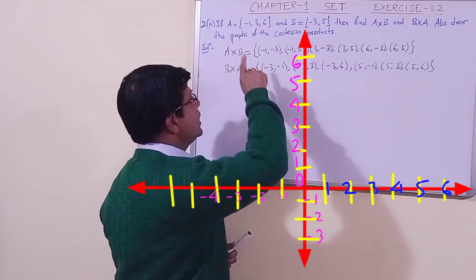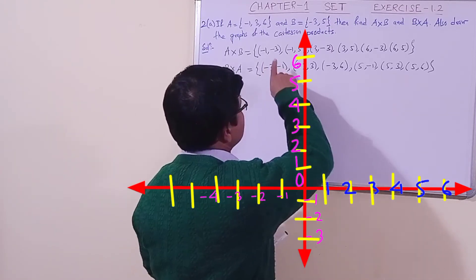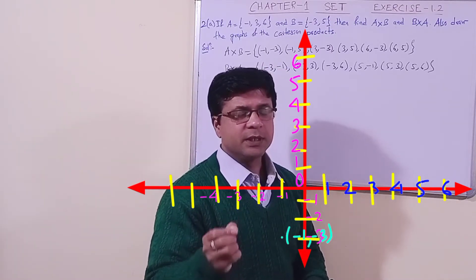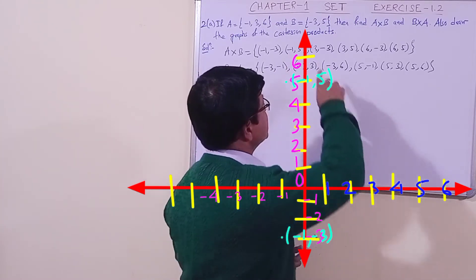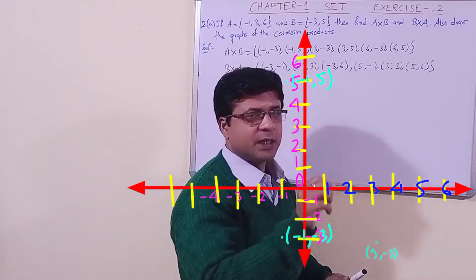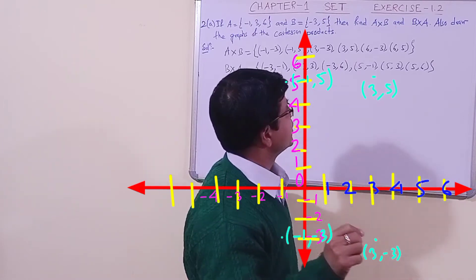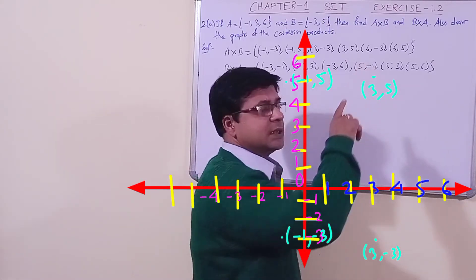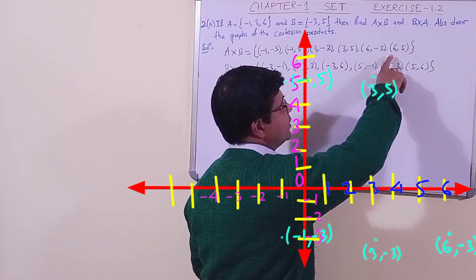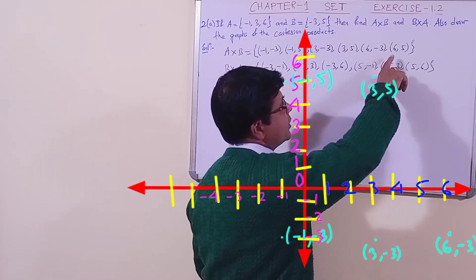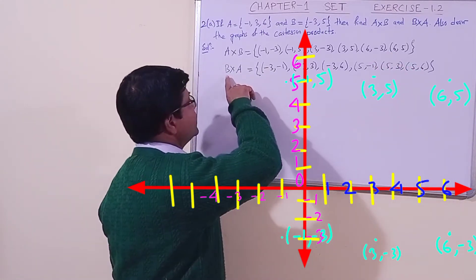First, let us plot (-1, -3) — you can see we have plotted this in the third quadrant. Then (-1, 5). Then (3, -3), let us plot it. Then (3, 5), we have plotted it. Then (6, -3) — you can see the plotting. Then (6, 5), let us plot it in the first quadrant.